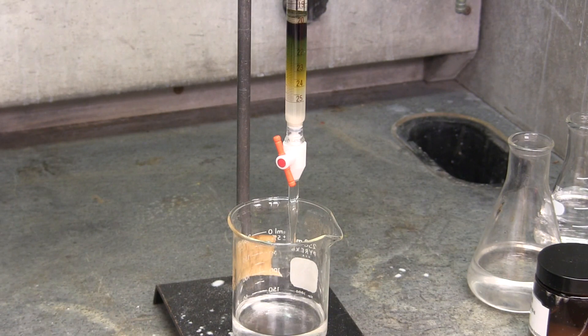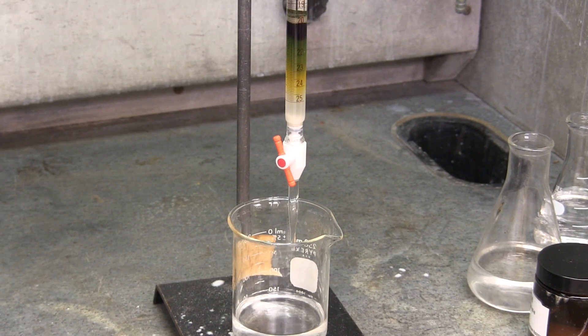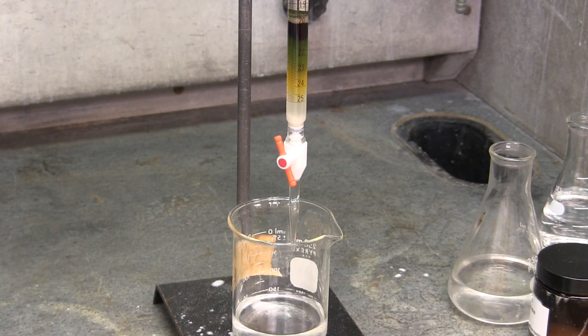We can see that the yellow band is starting to move further down than the dark green band. This will be the first fraction collected. Keep adding the 100% hexanes.